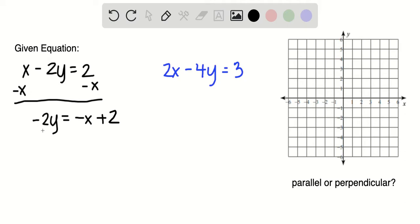The next thing I'm going to do is divide each side by negative 2 to get y all by itself. Remember when you divide the right side by negative 2, everything has to be divided by that negative 2.